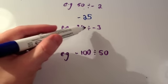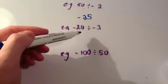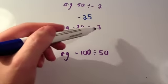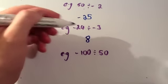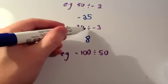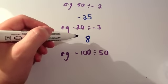Negative 24 divided by negative 3. Well, 24 divided by 3 is 8. And a negative divided by a negative is a positive. So the answer is 8.